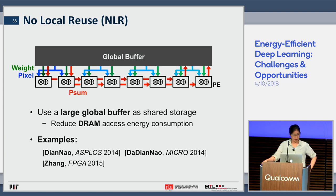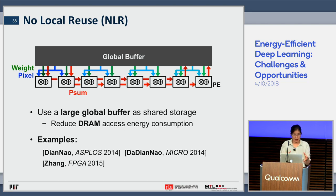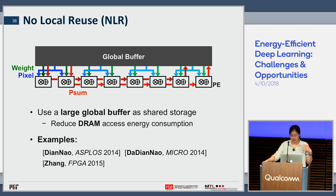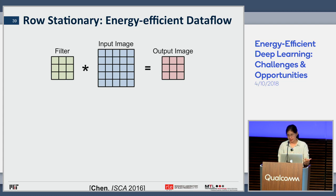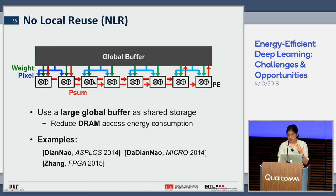Data movement energy costs in 65nm technology: multiply-accumulate is 1×; reading from a register file under 1KB is also 1×; reading from a neighbor PE is 2×; reading from a global buffer of 100–500KB is 6×; going to DRAM is 200×. The objective is to access most data in the low-cost levels of the memory hierarchy. The challenge is that storage at each level is very small — only 1KB per processing element — while the neural net has millions of parameters.